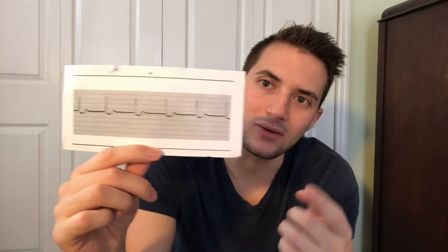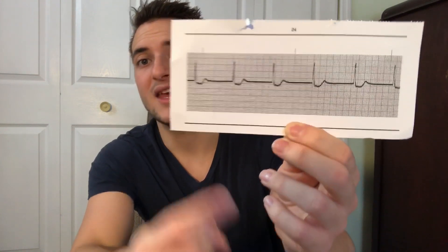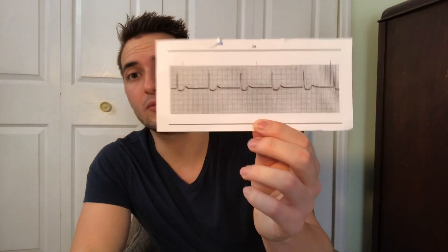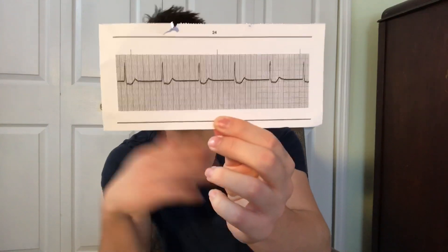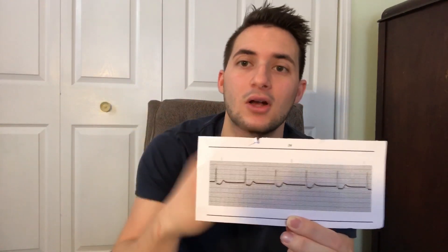Junctional rhythm — there is no P wave, or the P wave is inverted. The way I remember that is if the P wave is inverted, it looks like a J. Here, there is no P wave — you see how it's just a flat line up to the complex. If the P wave is inverted and then goes up to the R wave, it looks like a J. Junctional rhythm is usually really slow, 40 to 60. If it's faster than 60, it's accelerated junctional rhythm. No P wave or it's inverted — that's junctional rhythm.